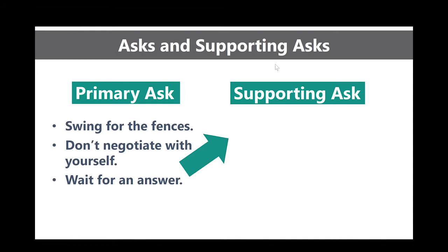Not every member of Congress is ready yet, so once you've delivered your ask and heard their response, be ready to pivot into a supporting ask — smaller steps they can take along the way. Prepare this ahead of time with the liaison and lobby team. It may differ depending on the member: if they're on a certain committee, your supporting ask might be that they hold a hearing.